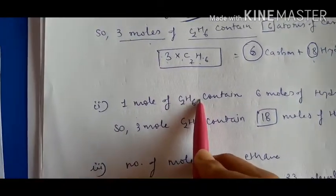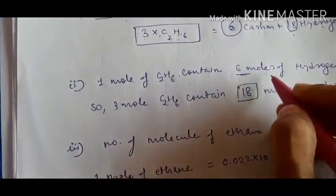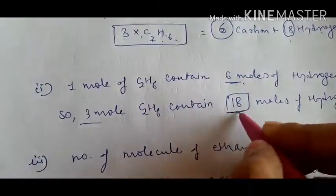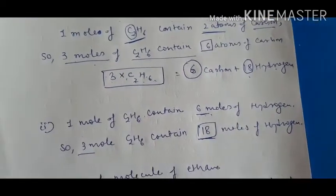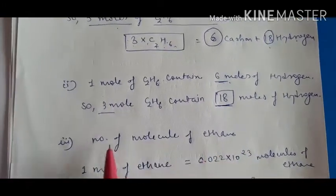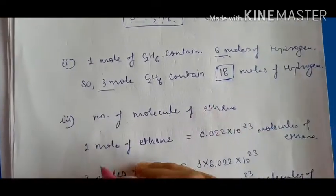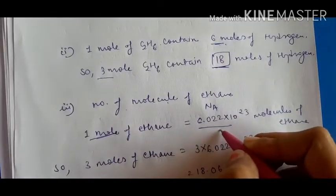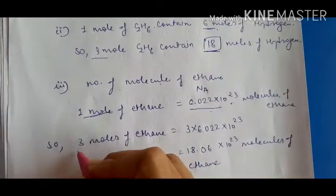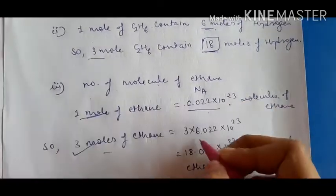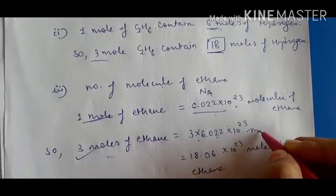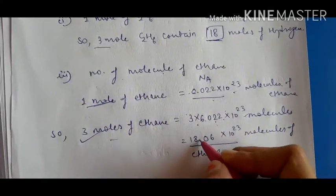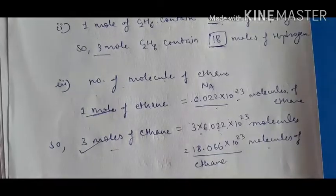One mole of ethane has 6 moles of hydrogen, so 3 moles of ethane have 18 moles of hydrogen. For the number of molecules: since 1 mole = 6.022 × 10²³ molecules, 3 moles of ethane contain 3 × 6.022 × 10²³ = 18.066 × 10²³ molecules of ethane.